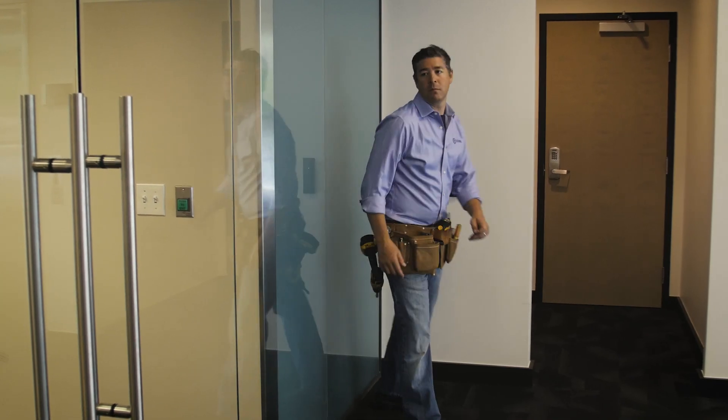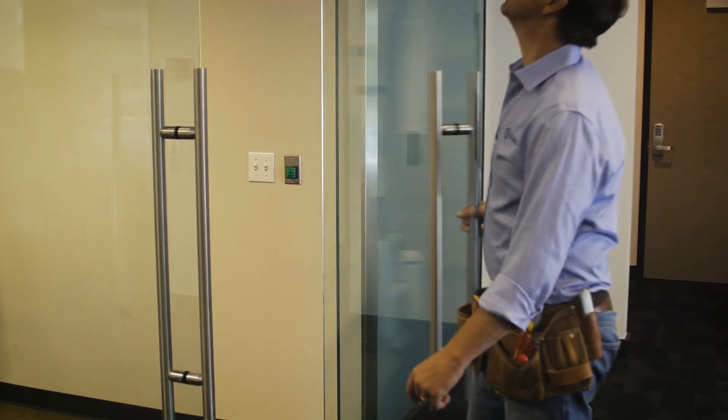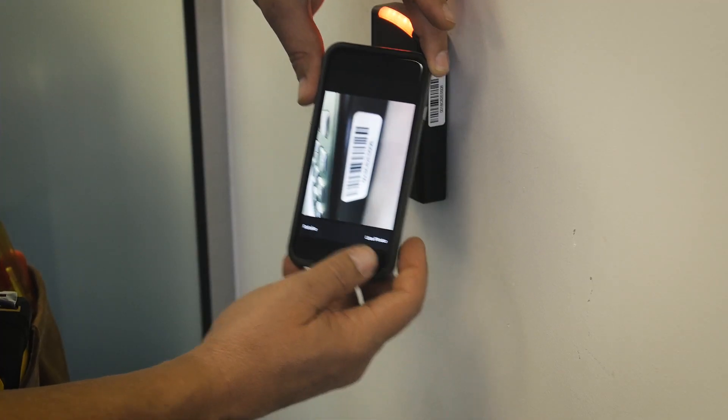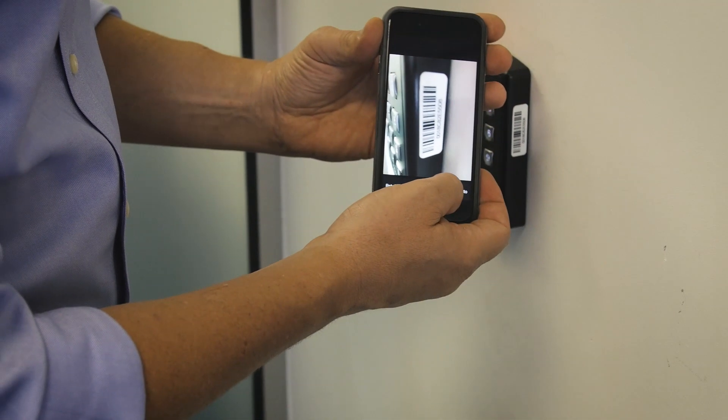Take a picture of the MAC ID on the side of the reader with your mobile device. This will connect the reader to the software and begin the configuration tests.